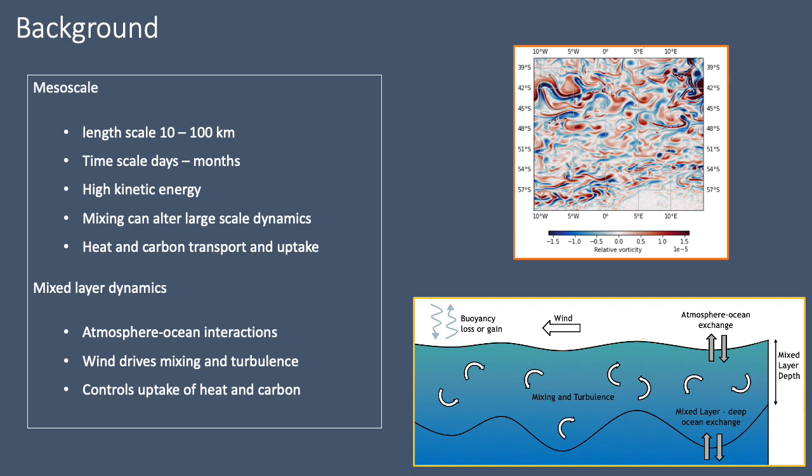So our other focus in the study is on the mixed layer. So it's the topmost layer of the ocean. It acts as a gateway between the atmosphere and the deeper ocean. So in summer, with increased solar radiation, it can be around 50 meters, whereas in winter with the deeper mixed layers, it can be around 500 meters.